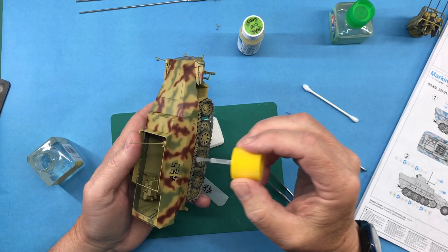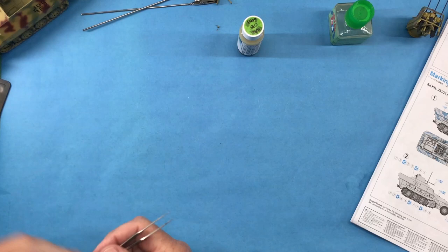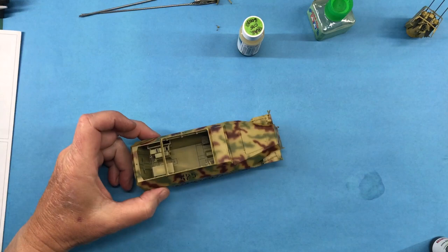Alright, do the same for the other side. While that's drying I can actually start in with some detail painting. We've got to paint the tracks, you got to paint the tools, a few other small items. So let me get my paints up and we'll get cracking on that. First thing I want to paint is the tracks.